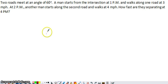So in this video, we'll check out another related rates example. The situation described here is that two roads are meeting at an angle of 60 degrees. One guy is going to walk along one of the roads beginning at 1 p.m., and they're going to be walking at a speed of 3 miles per hour. And then at 2 p.m., another person starts along the other road, and they're walking a little bit faster at 4 miles per hour. We want to know how quickly the two people are separating at 4 p.m.